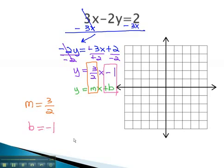Using this key information, we can make our graph starting at the y-intercept of negative 1. This is where the graph crosses the y-axis at negative 1.